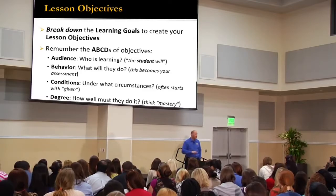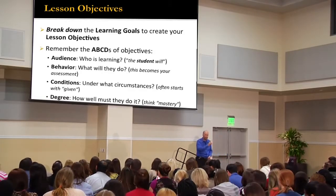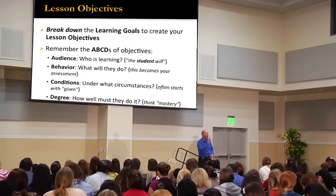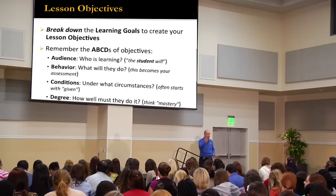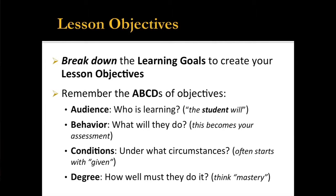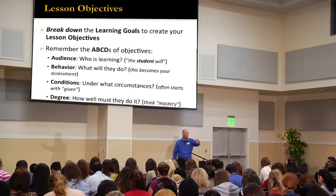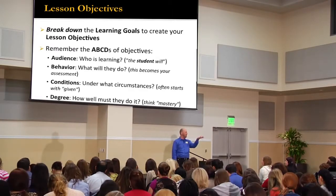Your lesson objectives. Remember that difference between learning goals and lesson objectives? This is where you break down your learning goals. In the example of a teacher work sample, I highlight one of the learning goals and explain how that contains six lesson objectives. So take a look at that example to see how that works — you're going to break down your learning goals to create your lesson objectives. Remember the ABCDs: your audience, the behavior, conditions, and the degree. How many of you learned about the ABCDs in your coursework? For those of you that didn't, pay close attention because it's ridiculously useful. Let me give you that same objective as an example.